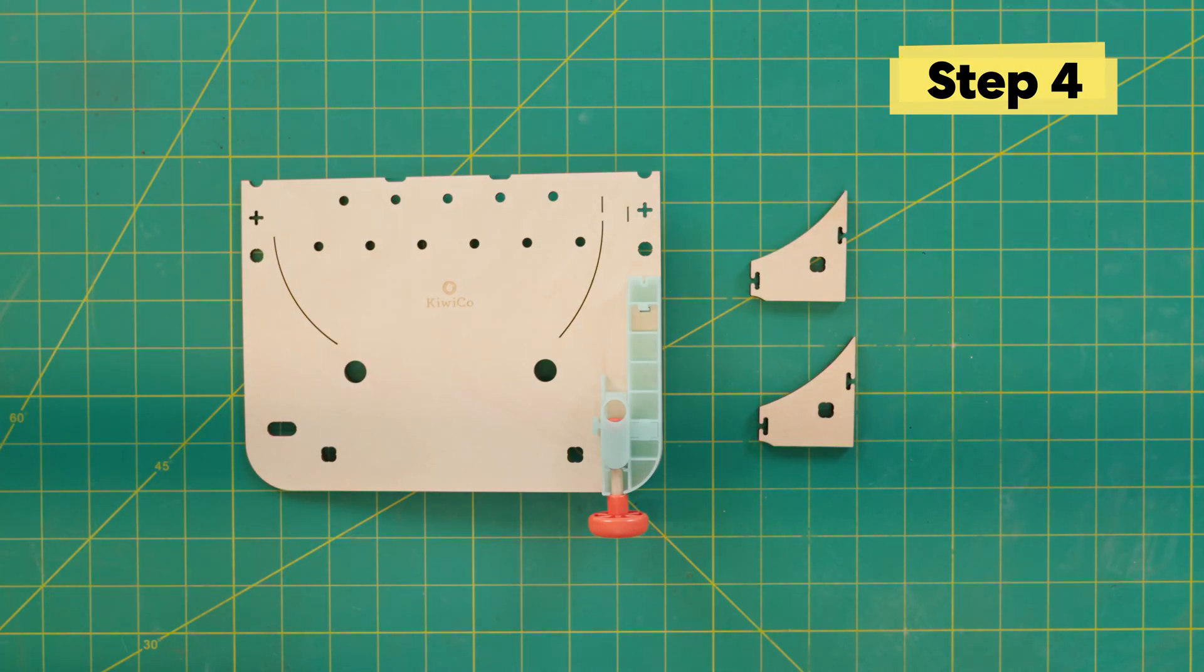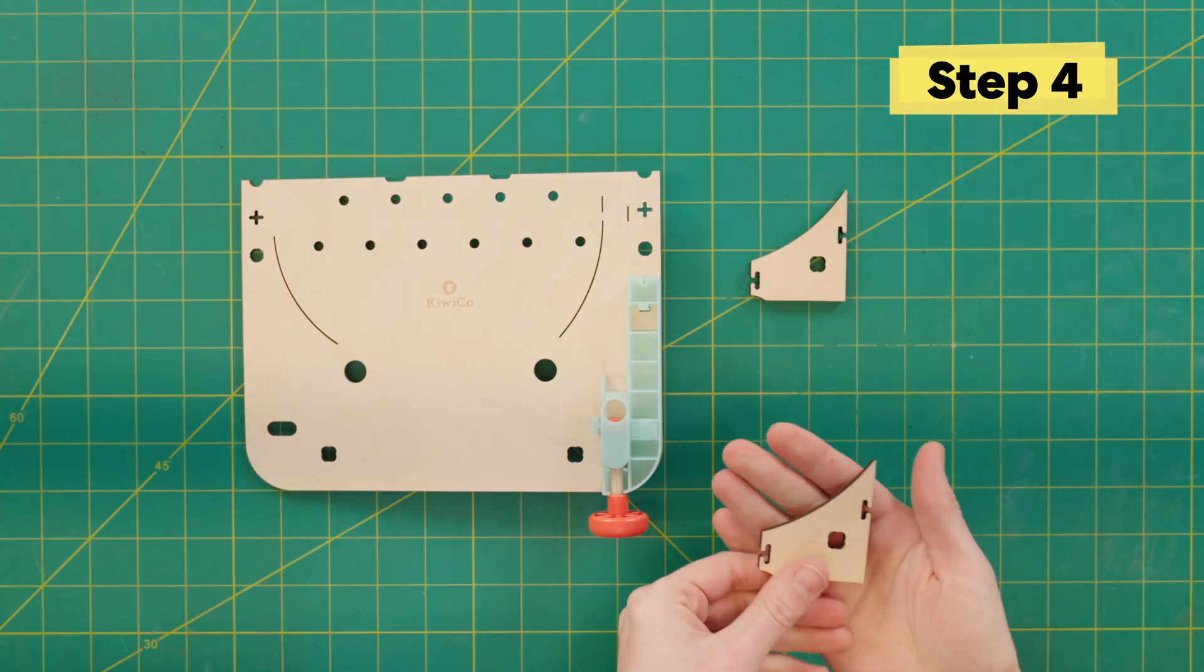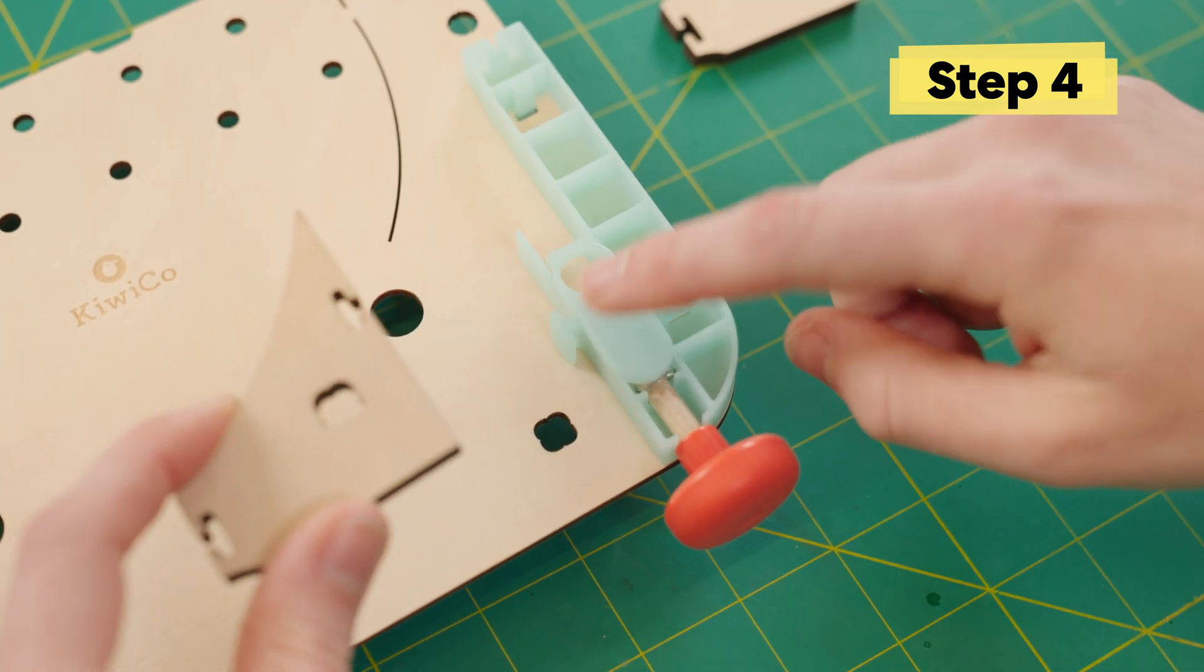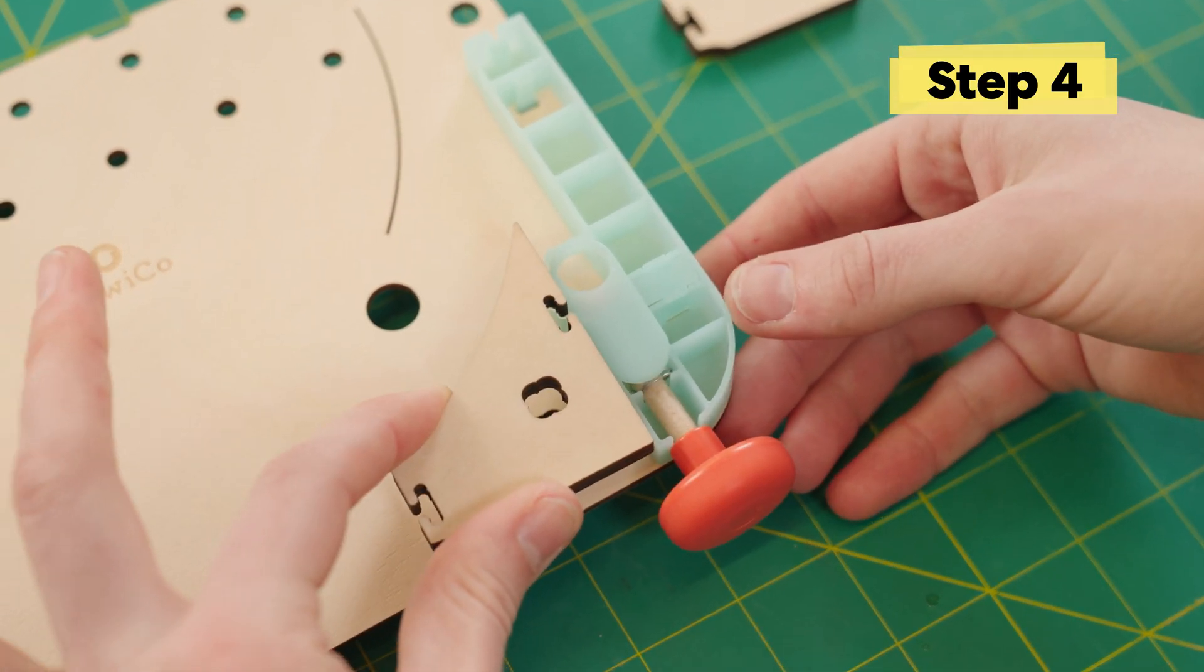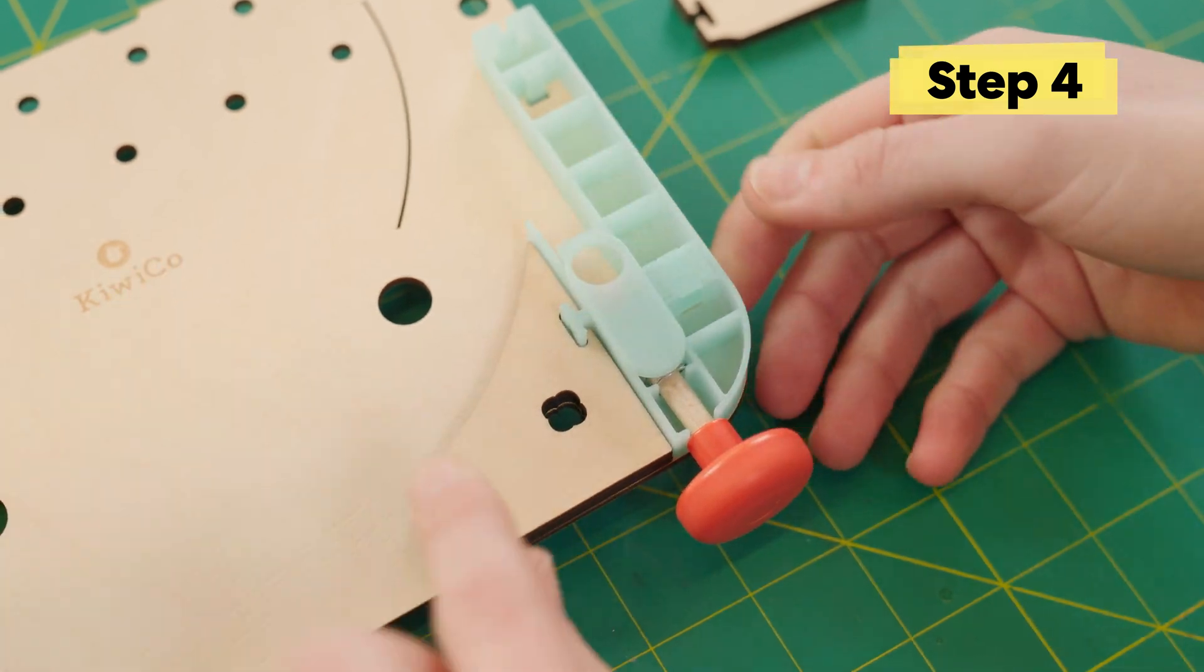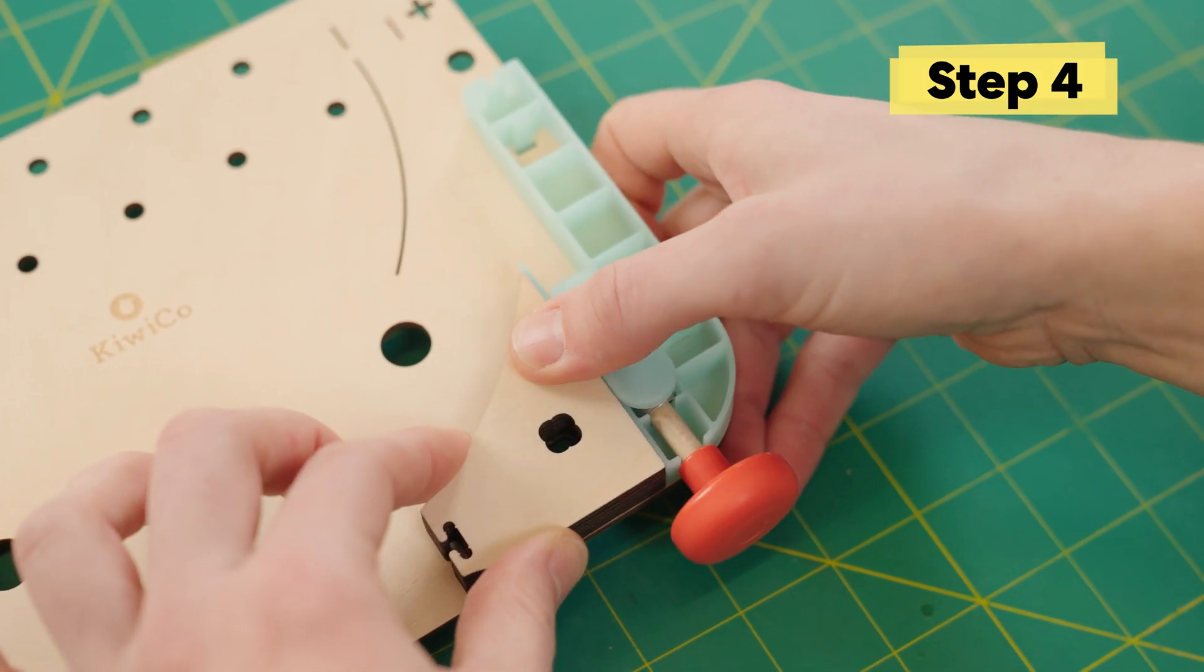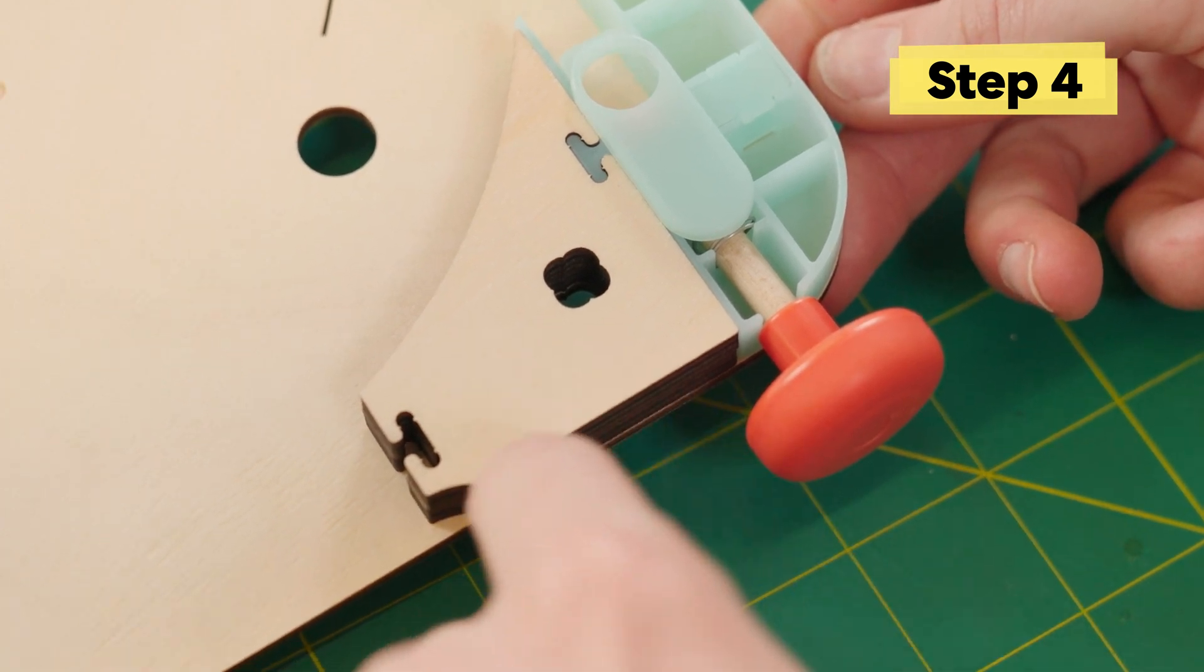So there's two of these pieces and they look exactly the same. Find the notch on the taller side of the piece and then slide that onto your plunger. And do the exact same thing with the second piece. The bottom of the pieces and that clover-shaped hole should all line up.